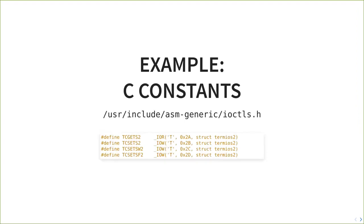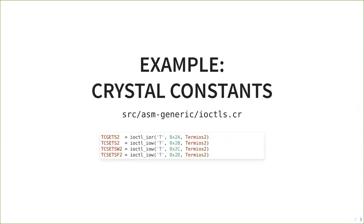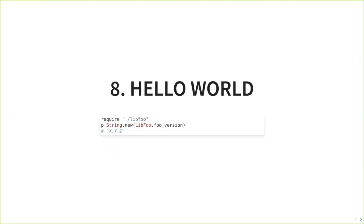Here are some C constants using those previous macros to define ioctl codes for dealing with terminal I/O, with literal data passed to them. And here are the same constants defined in Crystal using our previously defined Crystal macros — same logic, just different syntax. It's readable, tidy, and preserves all the original meaning.